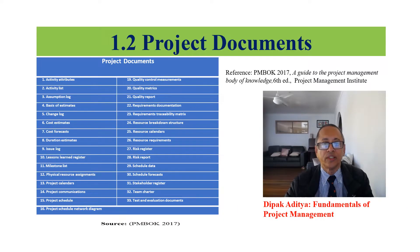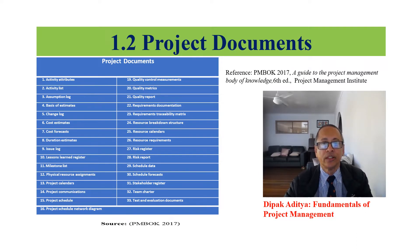Project documents: there are 33 documents to deal with in project management. Some are cost estimates, cost forecast, duration estimate, milestone list, resource requirement, risk register, risk report, schedule forecast, basis of the estimate, quality report, stakeholder register, and lessons learned register.